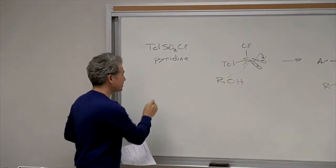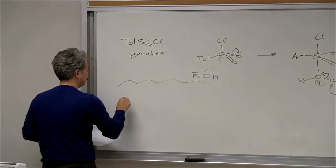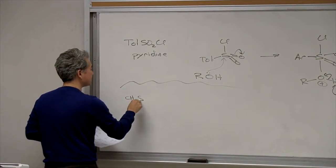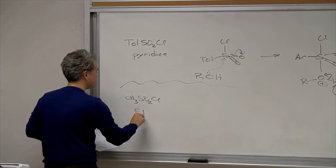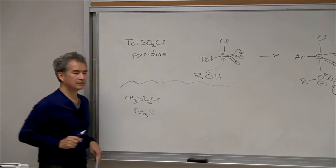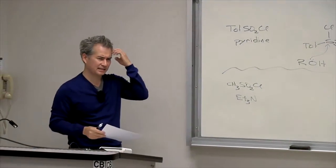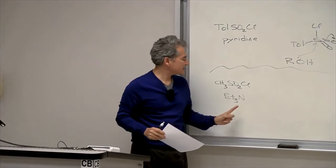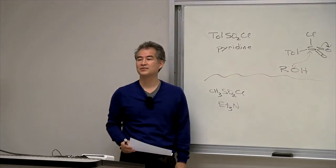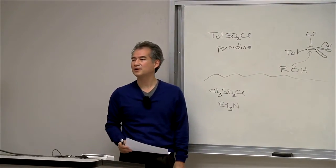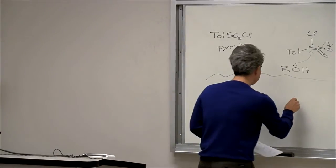There's another common leaving group that people use in organic chemistry — mesylate leaving groups. And the conditions are generally different. You generally do not use mesyl chloride in pyridine. If you're trying to make a mesylate leaving group, you almost invariably use triethylamine. And suddenly the mechanism changes — there's no way you could have known this.